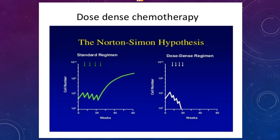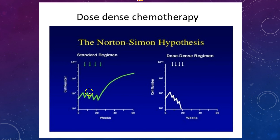To answer that question, let's look at the Norton-Simon hypothesis. This is a useful model. Consider a standard regimen with doses at 21-day intervals. The first dose is given, the cancer cells go down, but before the second dose is due, the cells start to regrow — not to the original extent, but still somewhat. Then another dose is given, the cells go down again, but before the third dose they grow again, and so on for subsequent doses.